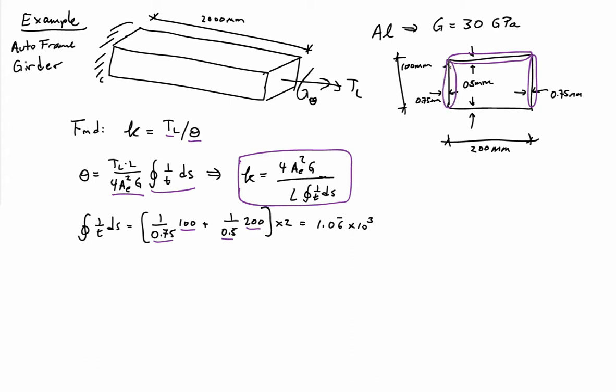And then if I go over the left side and the bottom piece, I'm going to pick up the exact same terms again, so I can multiply by 2. And the result then is 1.06 repeated times 10 to the 3. And there are no dimensions on that because I have 1 over distance and I have distance here, so they cancel each other out.